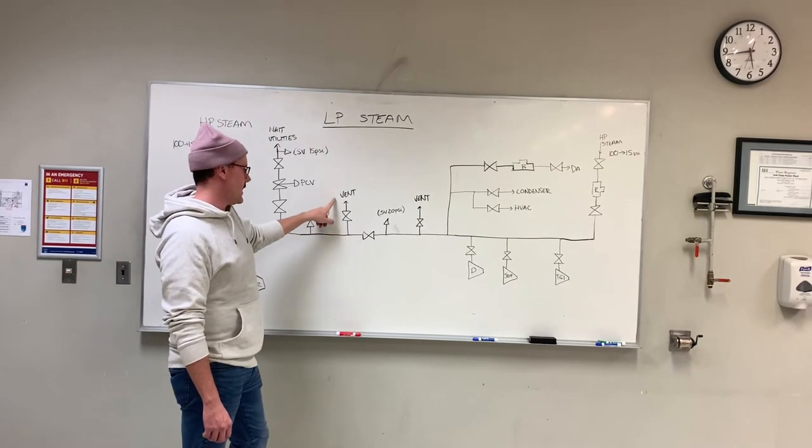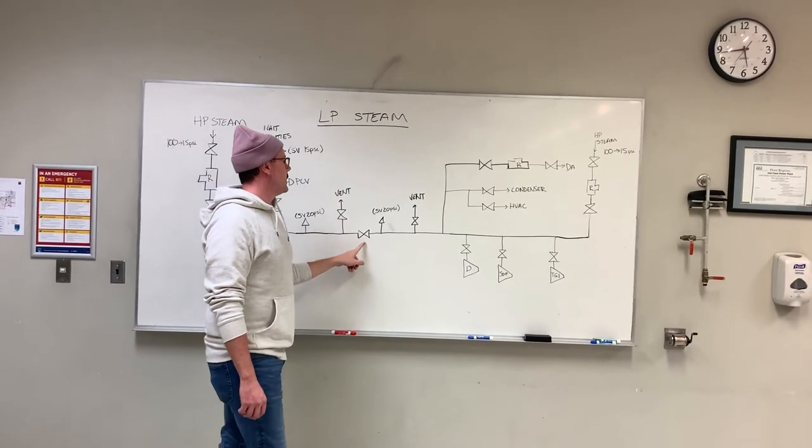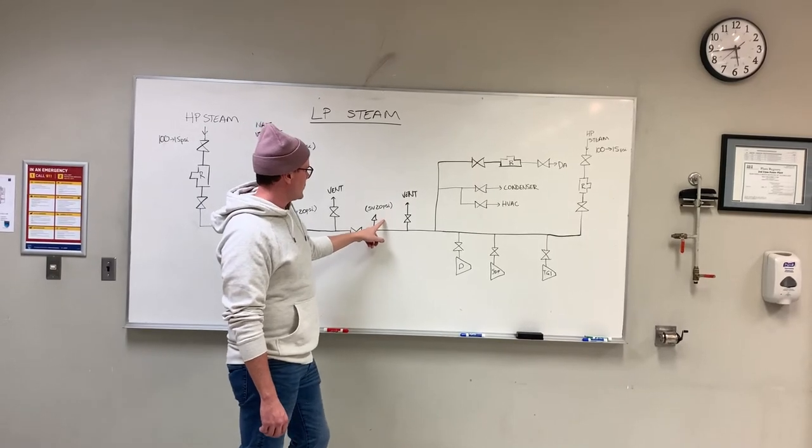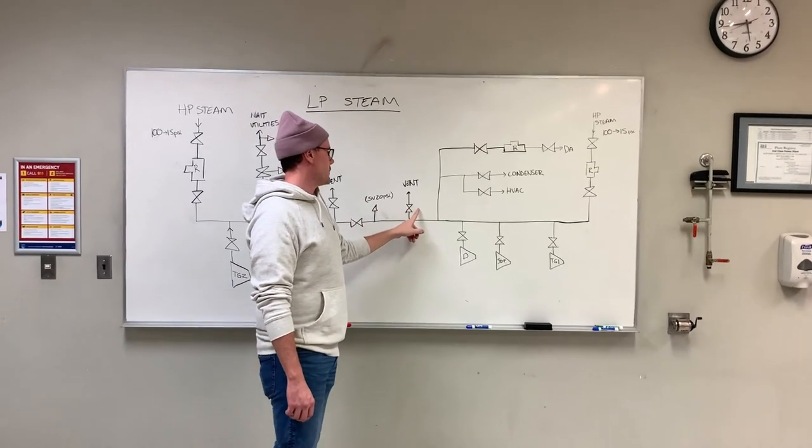Down here it's vented to atmosphere. We've got our header splitter. Then we go up to another safety valve that's set to 20 psi. It's vented again on the other side of the splitter.